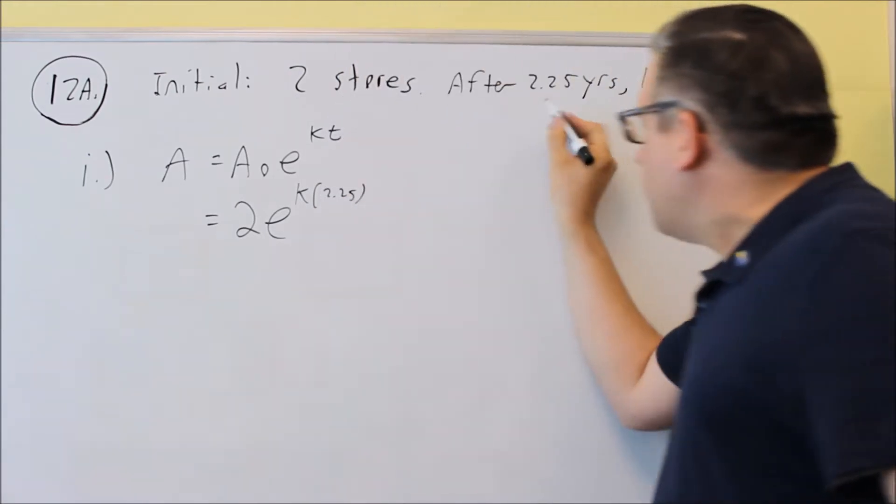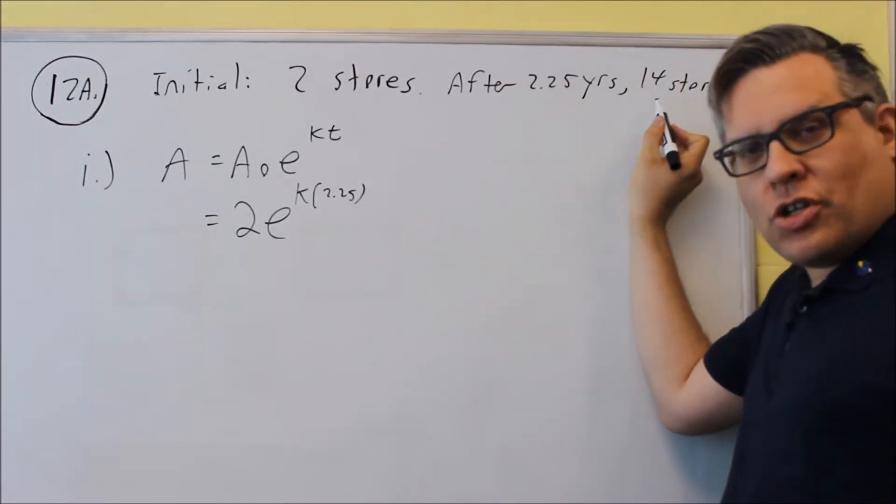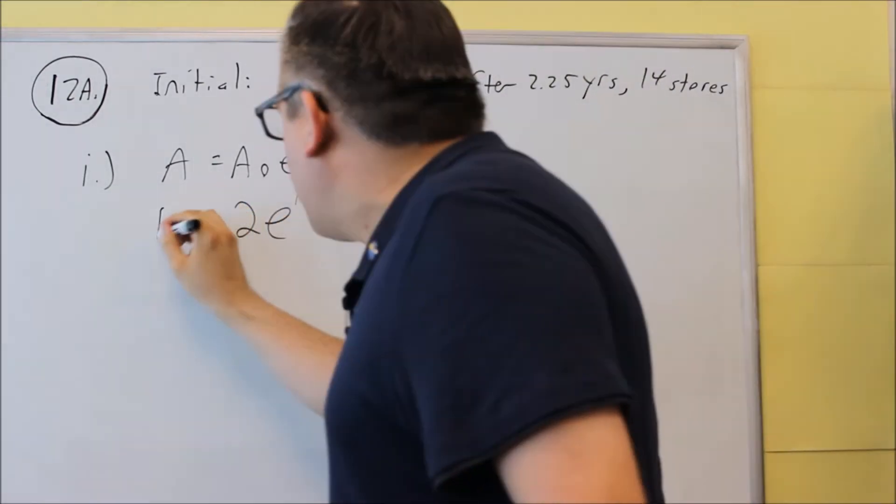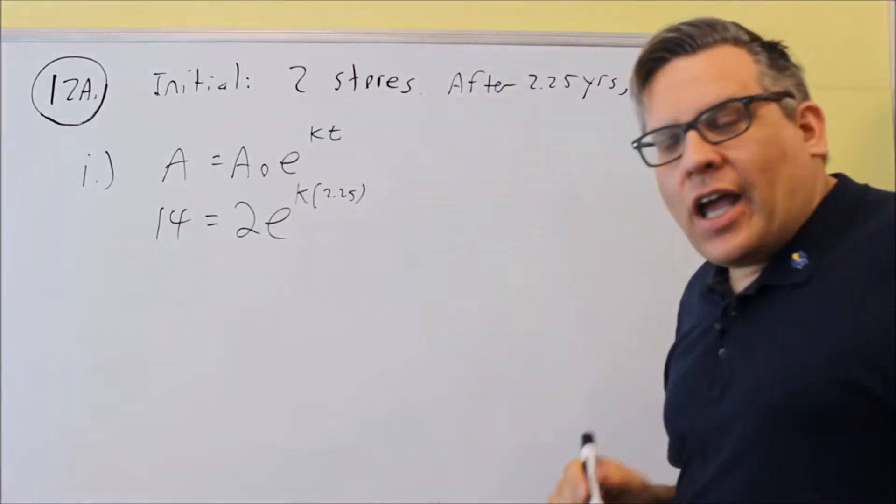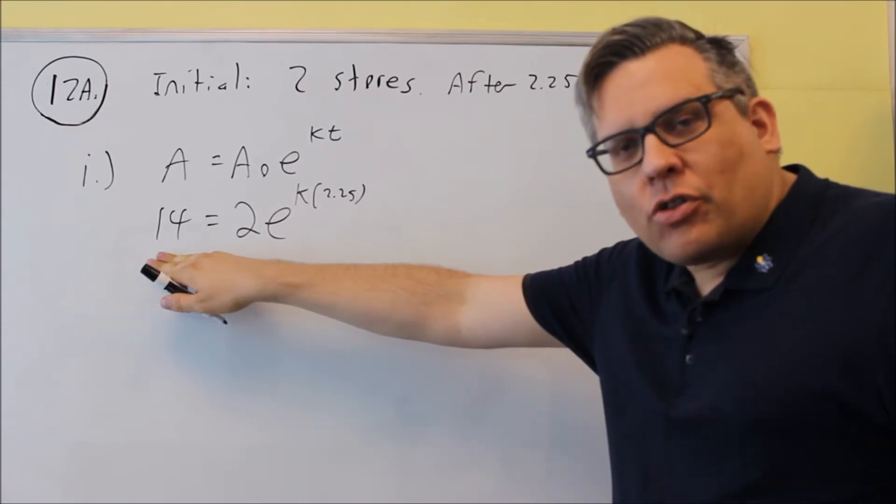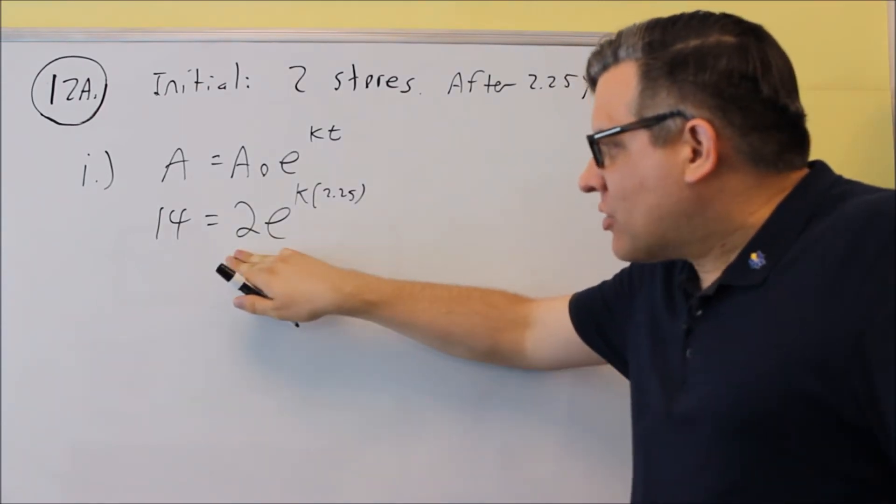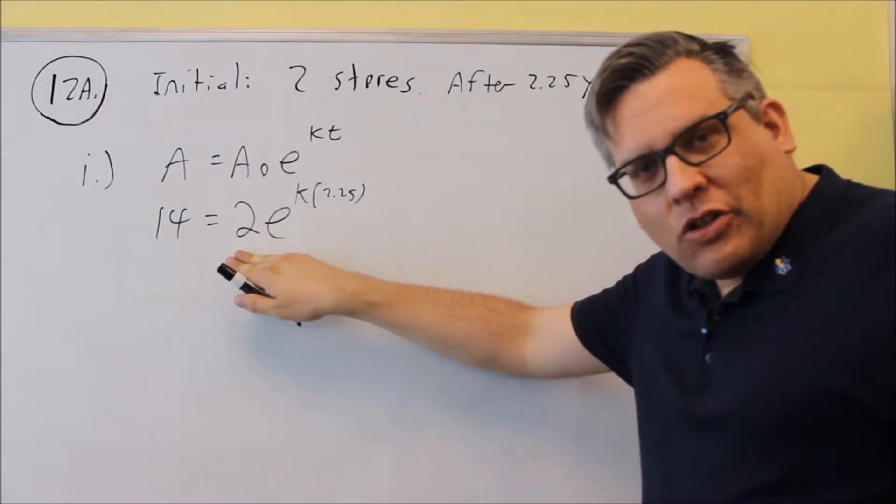And it says that after 2.25 years, there's 14 stores. That's what you're going to put in here for A. So this would be the amount or the population after the growth has occurred, and this is the initial amount that they give.